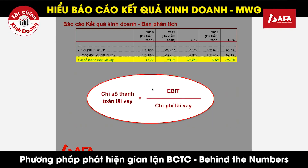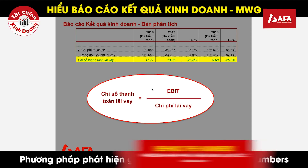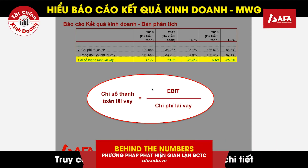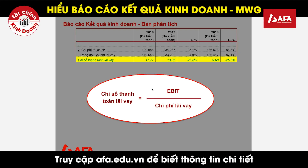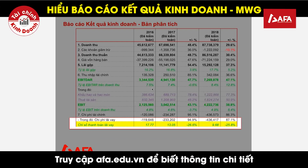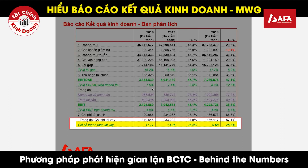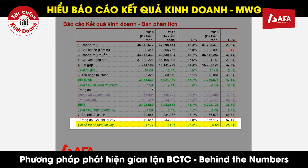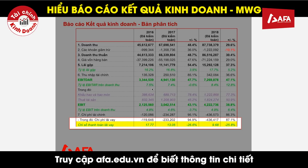Chỉ tiêu tiếp theo là lãi vay và chỉ số thanh toán lãi vay, được tính bằng EBIT chia cho chi phí lãi vay, bởi vì EBIT là đại diện cho khoản lợi nhuận không chịu ảnh hưởng bởi cấu trúc vốn. Chỉ số thanh toán lãi vay thường được tính bằng số lần. Chỉ số thanh toán lãi vay của Thế Giới Di Động cho kết quả rất tốt ở mức 17 lần. Tuy nhiên chỉ số này ngày càng giảm bởi từ năm 2017-2018, Thế Giới Di Động bắt đầu xuất hiện các khoản vay dài hạn.